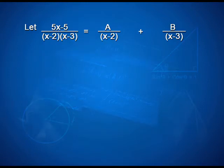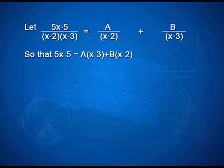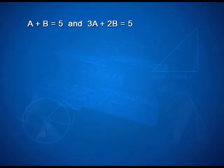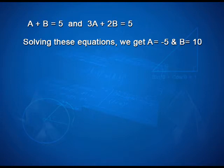Let (5x-5)/((x-2)(x-3)) = A/(x-2) + B/(x-3), so that 5x-5 = A(x-3) + B(x-2). Equating the coefficients of x and constant terms, we get A + B = 5 and 3A + 2B = 5. Solving these equations, we get A = -5 and B = 10.